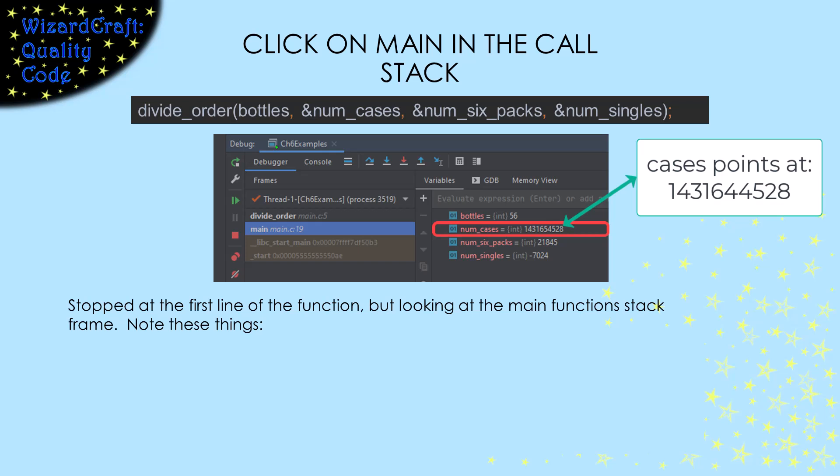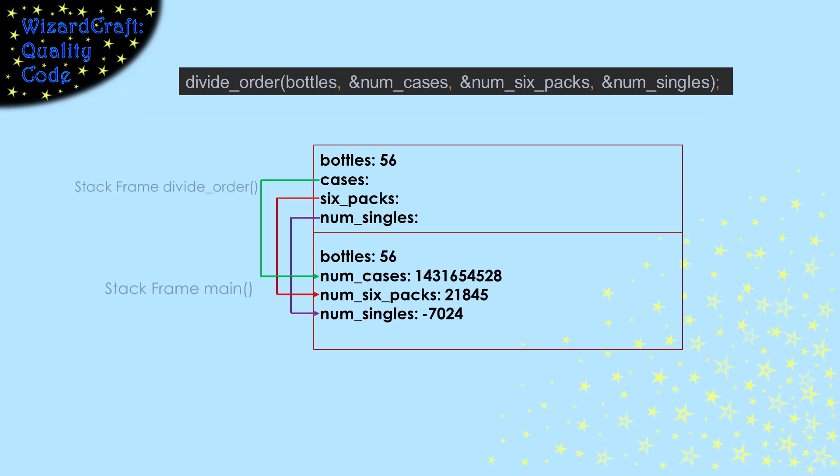I think we need a picture of that. Here, I'm showing our two stack frames and just the local variables. In the main frame, all of our variables are just holding integers, and some of the values are just garbage that was laying around. In the divide_order frame, bottles is just an integer. Notice that it's a different variable than the bottles in main. Changing one would not change the other.